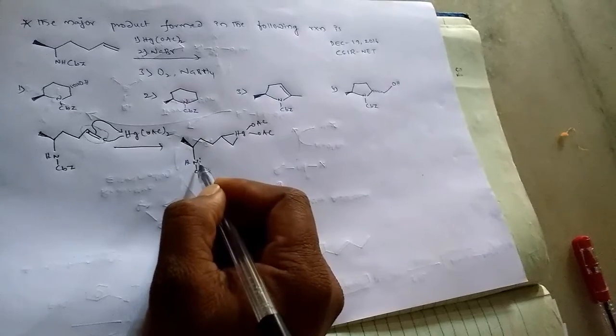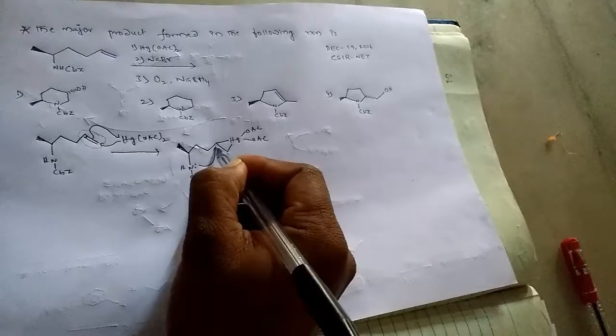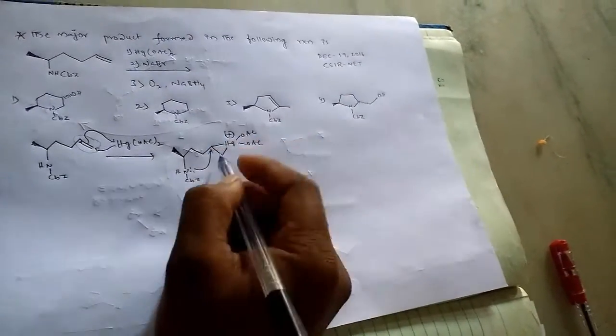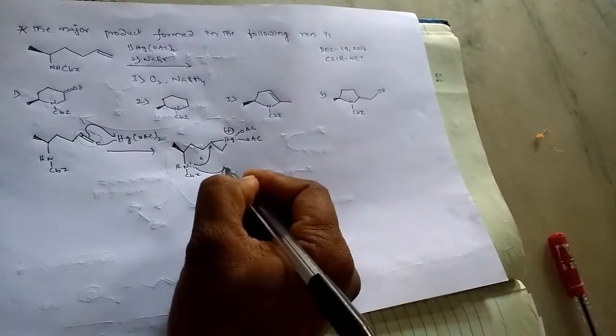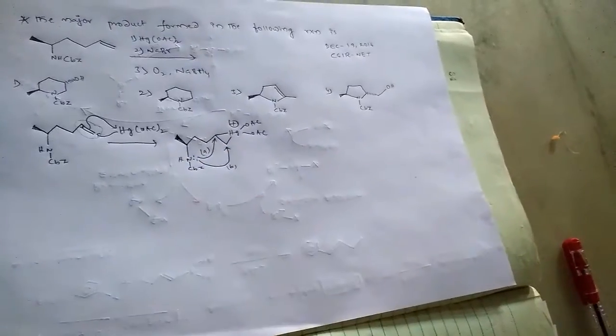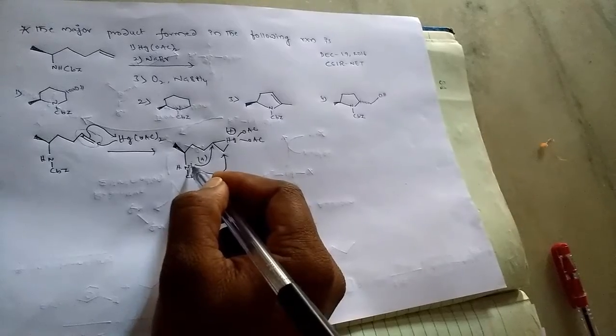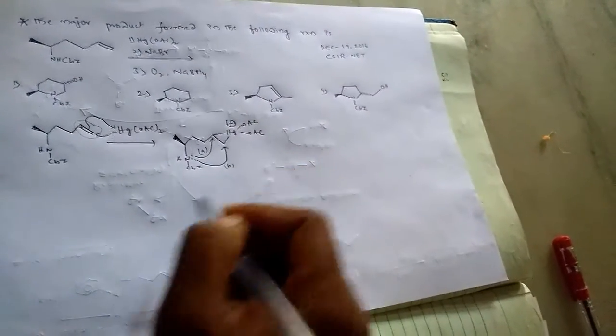Okay, further, the lone pair electrons on the nitrogen are attacked here. And we have the chances of two possibilities. Consider this is A and consider this is B. Okay, and to compensate this positive charge on the mercury, the lone pair of electrons from the nitrogen attack on these two positions A and B.